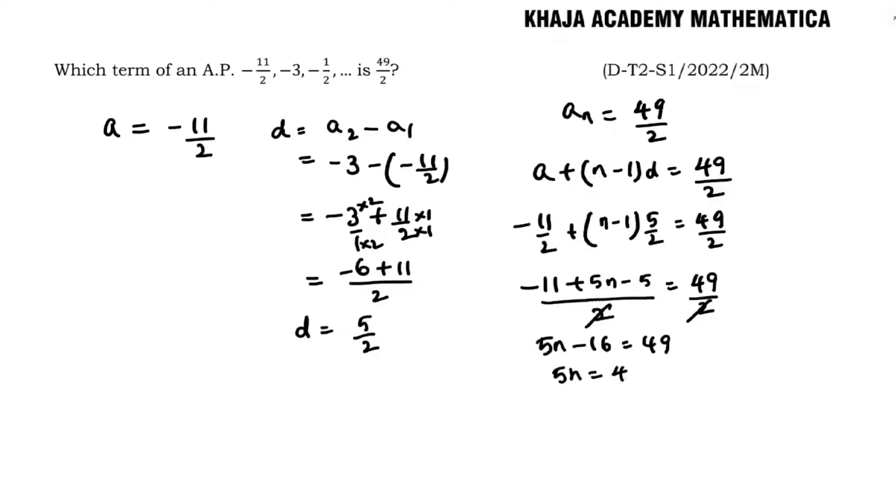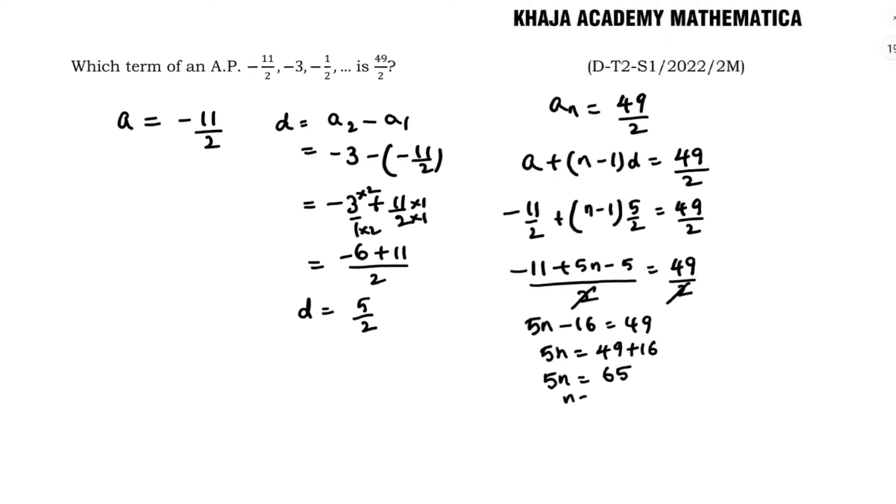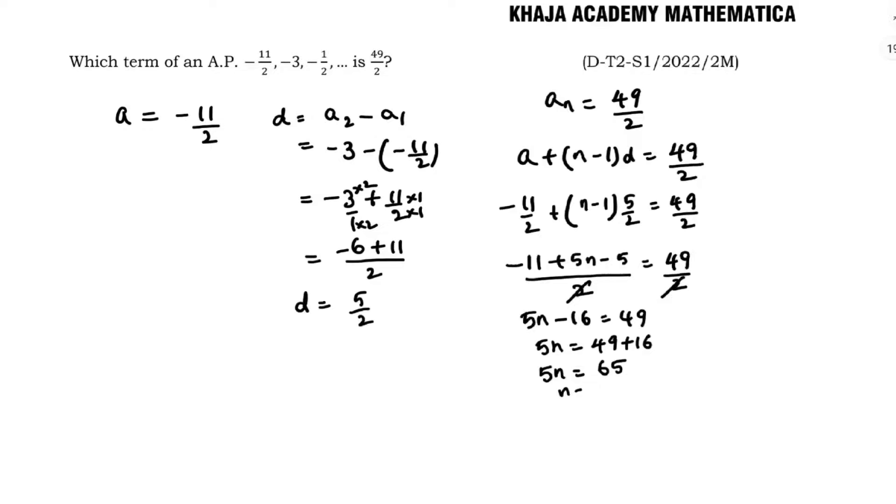5n equals 49 plus 16, so 5n equals 65. Therefore n equals 65 by 5, which is nothing but 13.